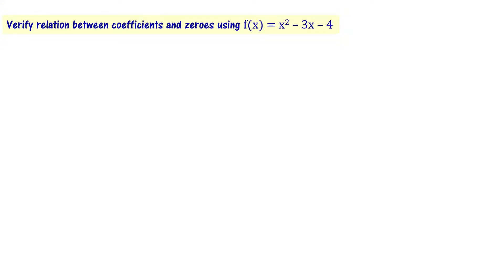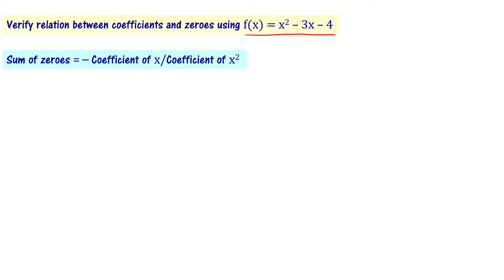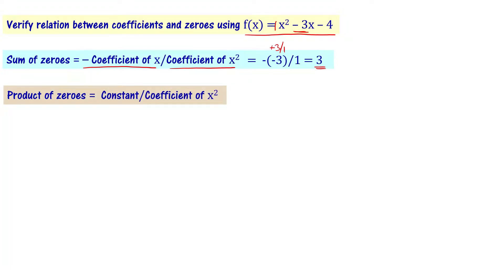Let us verify these relations using f of x equal to x square minus 3x minus 4. Sum of zeros equals minus coefficient of x divided by coefficient of x square. Coefficient of x is minus 3, coefficient of x square is 1, so sum of zeros equals minus of minus 3 divided by 1, which is plus 3. Product of zeros equals constant divided by coefficient of x square, which is minus 4 divided by 1, equal to minus 4.